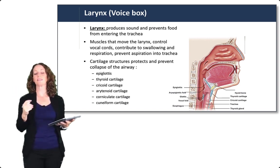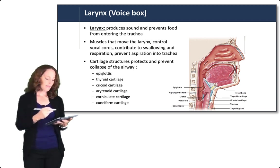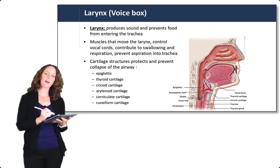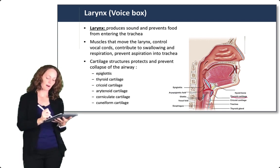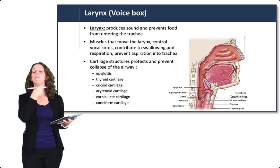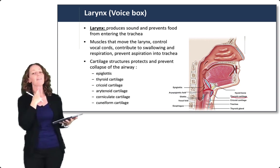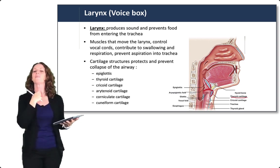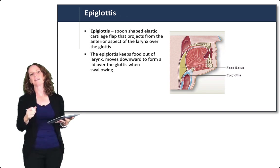The larynx is surrounded by many cartilaginous structures that are protective and prevent collapse of the airway. The epiglottis closes off the top of the larynx. The largest cartilage is the thyroid cartilage — this is where you find the Adam's apple, much more prominent in men. It is named thyroid because it is shield-shaped, not because it is where the thyroid gland is located. The thyroid gland is located much further down.